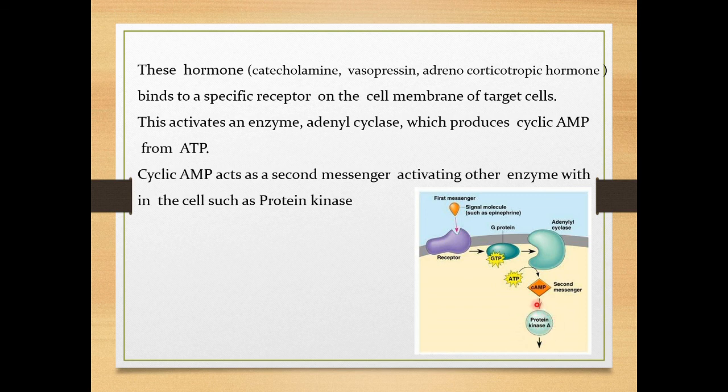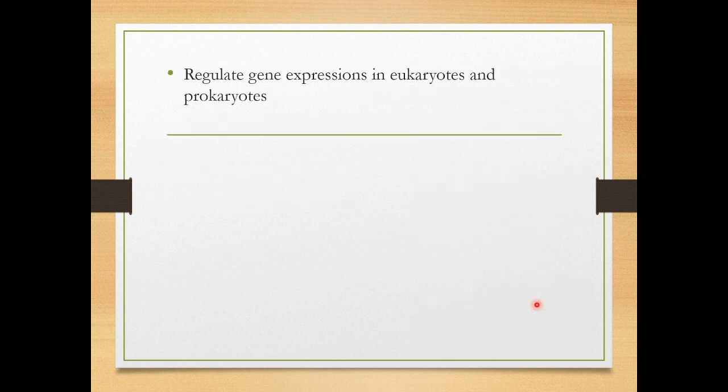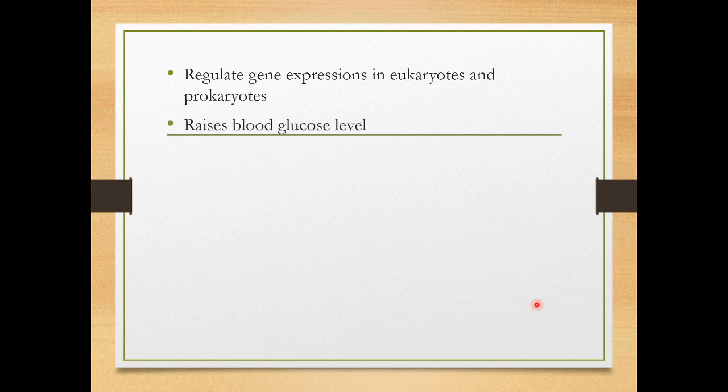This second messenger activates a series of enzymes called protein kinase A, which makes physiological changes. Cyclic AMP also regulates gene expression in both eukaryotes and prokaryotes — you may know the operon concept, involving the switching on and off of genes.